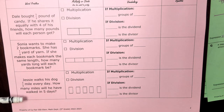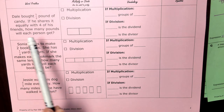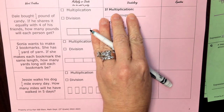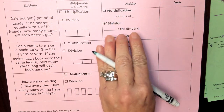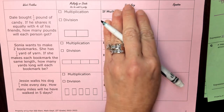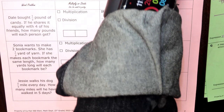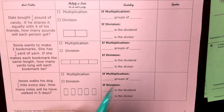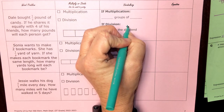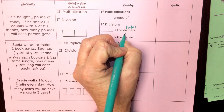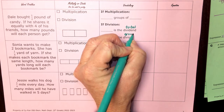At this time, go ahead and try to work through each one of these. Remember that if you're choosing multiplication, it cannot also be division — it's either one or the other. Also remember: the dividend is the total, and the divisor is the groups or how many in each group.